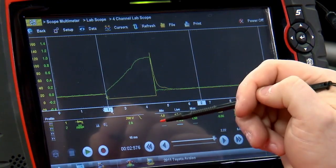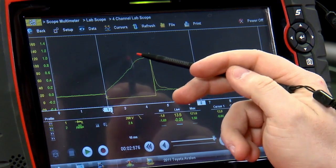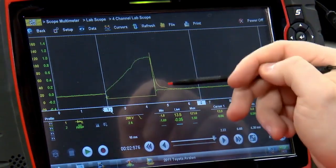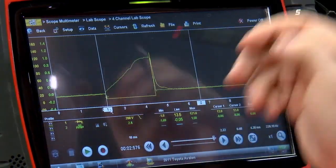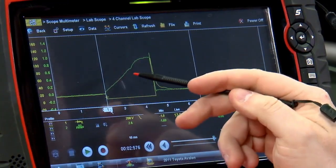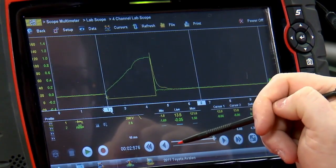And then this is a current limited injector. So once it gets to a set current that the PCM dictates, it's just going to level off and then close at the same time that the injector closes. Now, if this wasn't a current limited injector, you'd see it continue up like a shark fin until the ground is released.